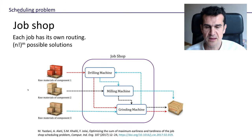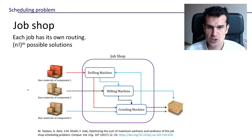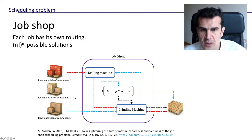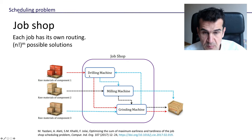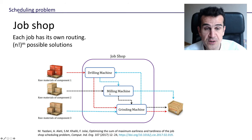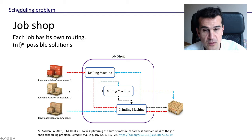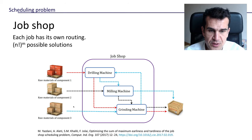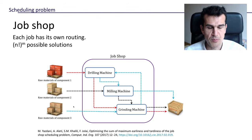The next problem we're going to see, which is slightly more general, is the job shop. And in the job shop, each job has its own routine. It's the problem we saw in a previous video. Now each of these components is going to be processed in a different first machine: the first component will go first to the drilling machine, the second to the milling machine, and the third to the grinding machine. And here, if you think about it, there are also N factorial raised to the Nth power possible solutions.